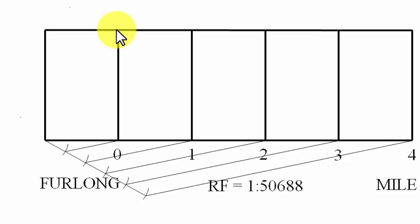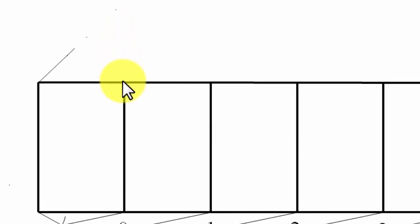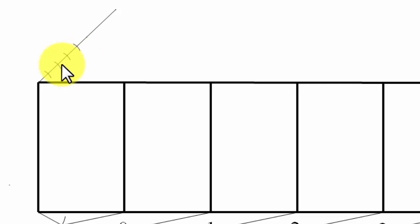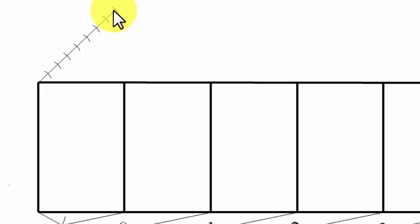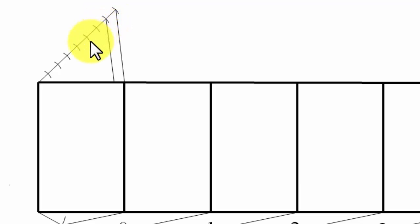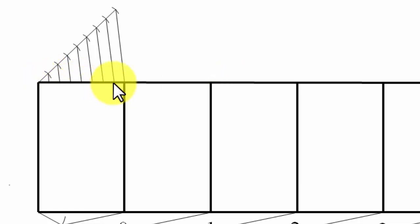The left-most one-mile portion represents one mile, which equals eight furlongs. To get divisions of one furlong each, we divide that portion into eight equal parts. Draw a line of any suitable length at any angle and place eight equally spaced arcs — approximately five millimeters apart. Join the eighth point back to the baseline, then use the drafter along that line to draw parallel lines through each successive point.